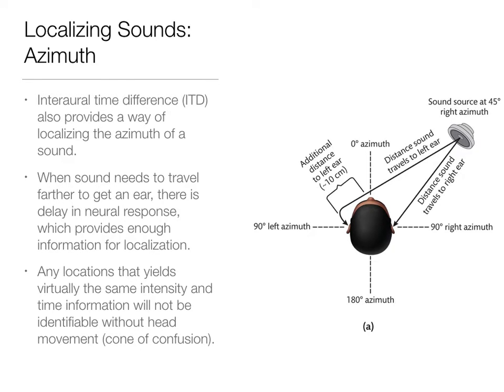Any locations that yield about the same intensity and time information will not be identifiable without head movement. If the time and intensity are the same and you don't move your head, you won't be able to figure it out. When we all try to hear something and do that head tilt, it's because we're trying to get more information about where that sound is coming from — moving our ears so that our brain can pick up on differences in azimuth.